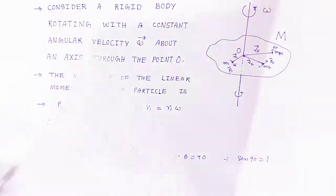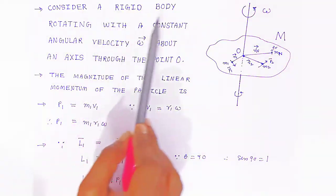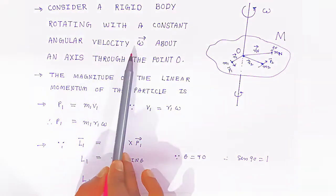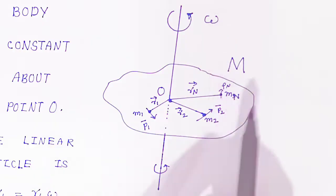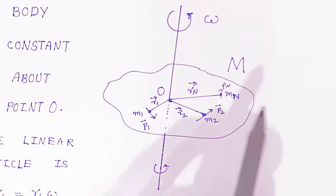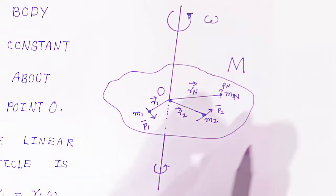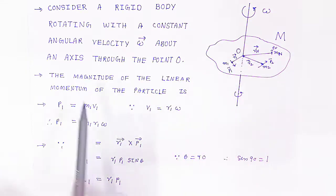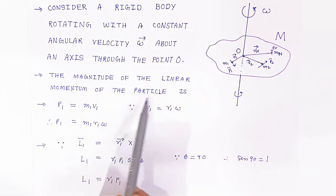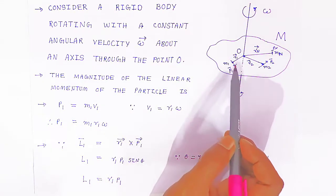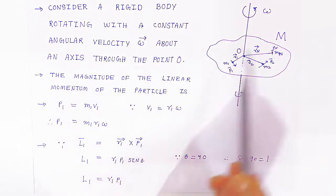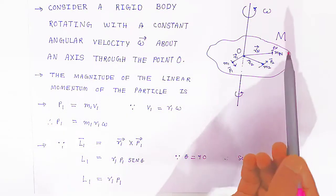Now consider a rigid body rotating with a constant angular velocity omega. This is an irregular rigid body rotating with constant angular velocity omega through axis, above the axis through point O. Now if we want to find the angular momentum, we first need to find the linear momentum of a particle. If you know the linear momentum, you can find the angular momentum.